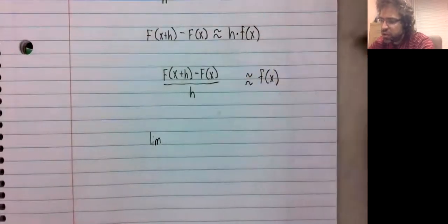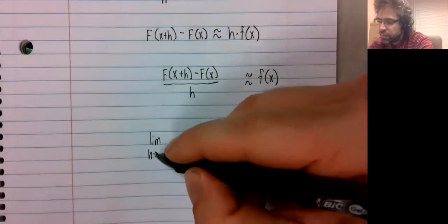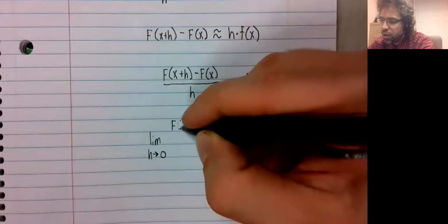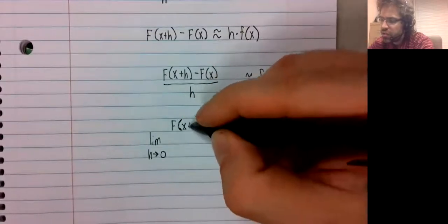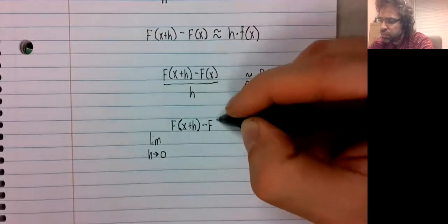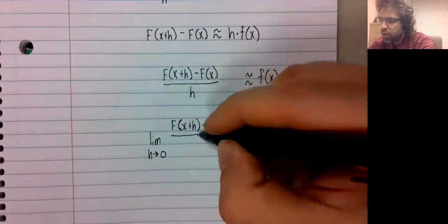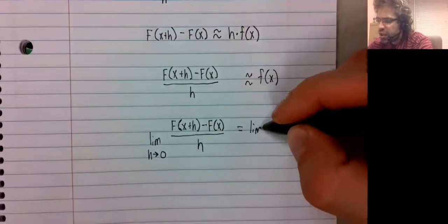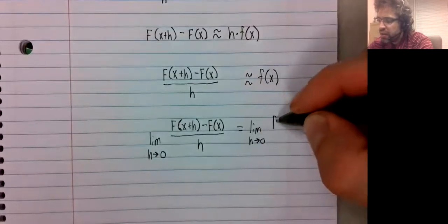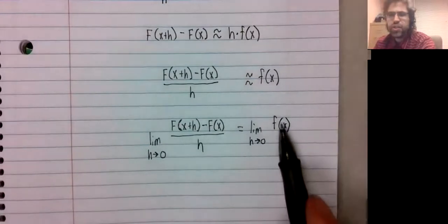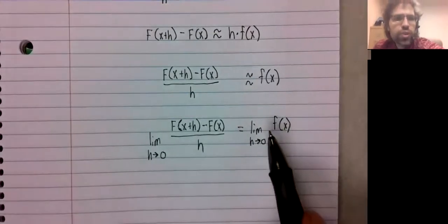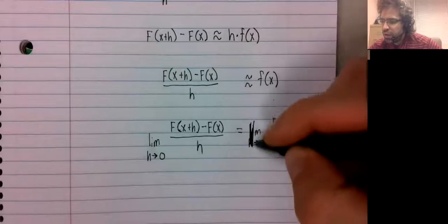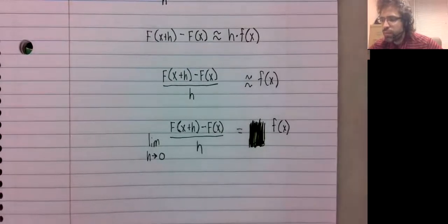Now we're going to take the limit as h approaches 0 over both sides of this equality. But here's the thing, there aren't any h's over here, so taking the limit as h approaches 0 doesn't do anything.